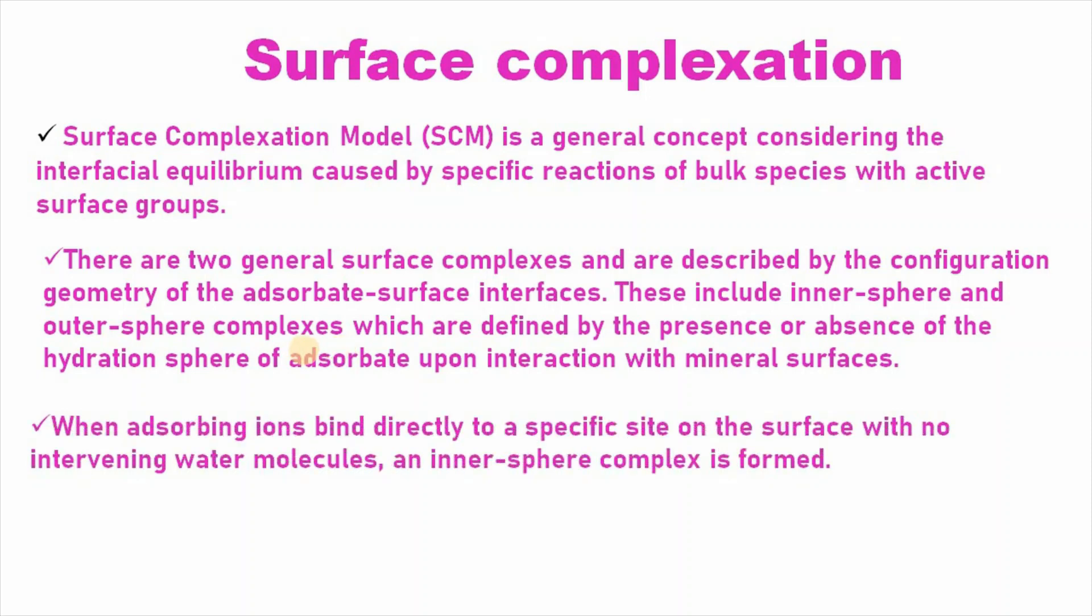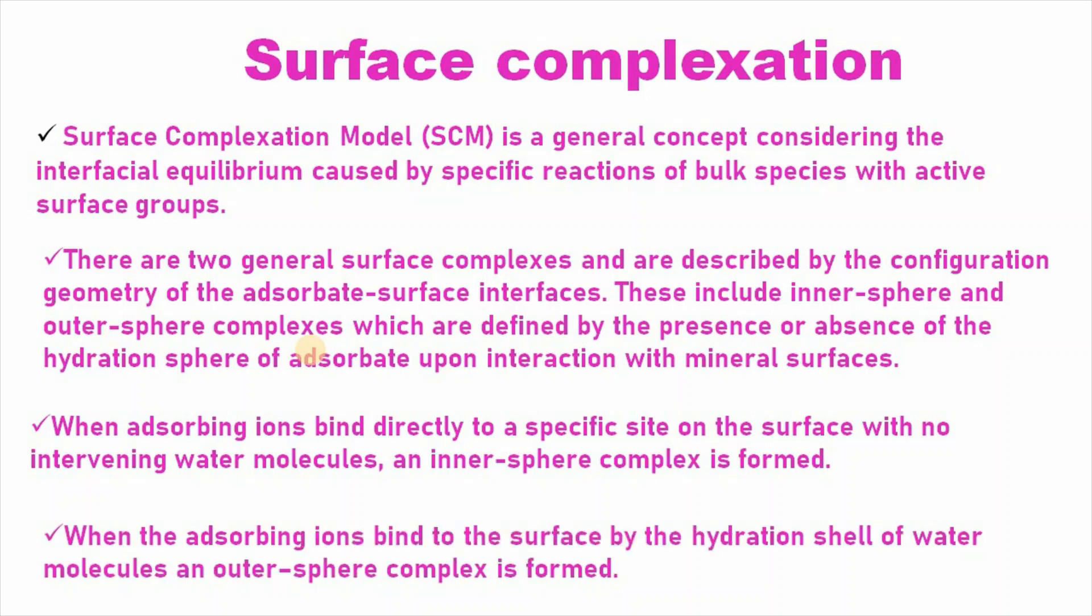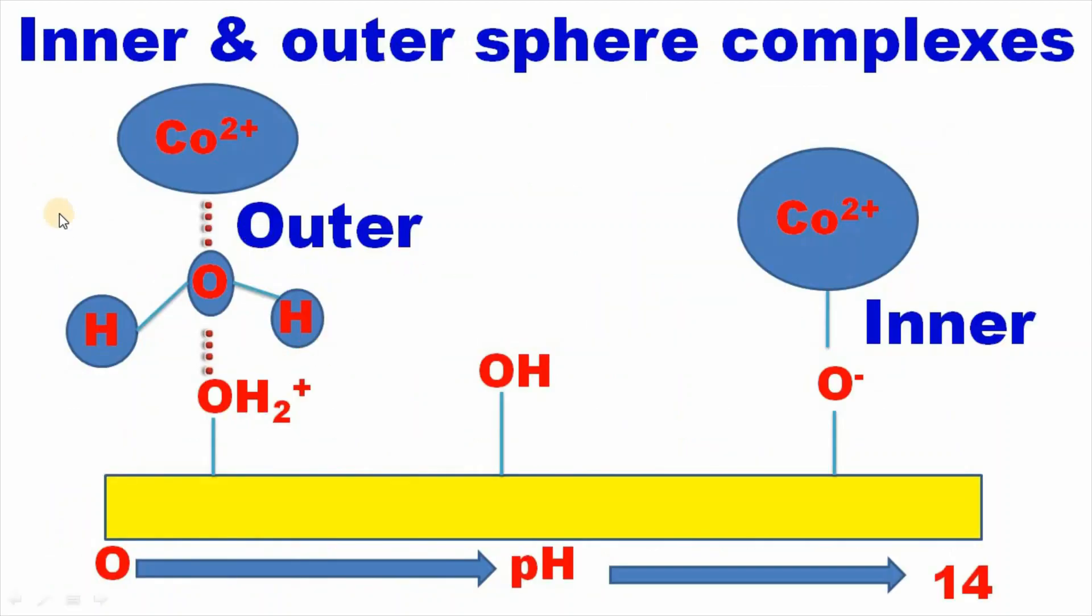When adsorbing ions bind directly to a specific site on the surface with no intervening water molecules, an inner sphere complex is formed. On the other hand, when adsorbing ions bind to the surface by hydration shell of water molecules, an outer sphere complex is formed. Here I have shown typical example of formation of outer sphere and inner sphere. It is interesting to note that cobalt adsorption forms outer sphere at low pH while it forms inner sphere complexation at higher pH.